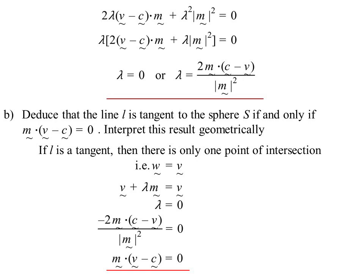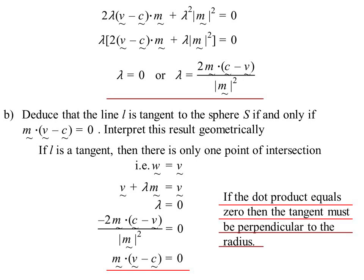So geometrically, what does it mean? Well, basically it's saying, well, the dot product equals zero, then the tangent is perpendicular to the radius. m, the direction vector, dot v - c. Well, that was the radius. They're perpendicular. There's our geometrical interpretation.